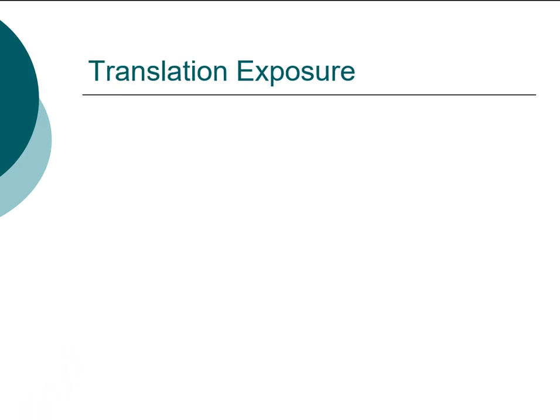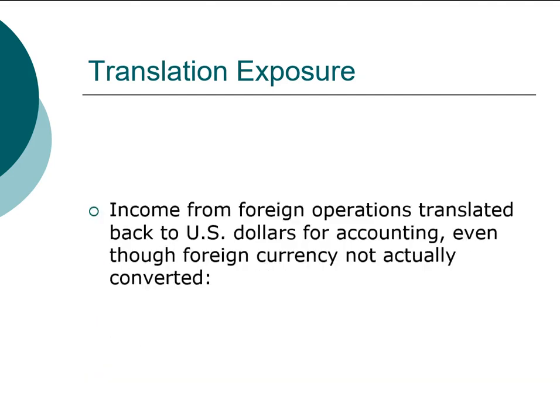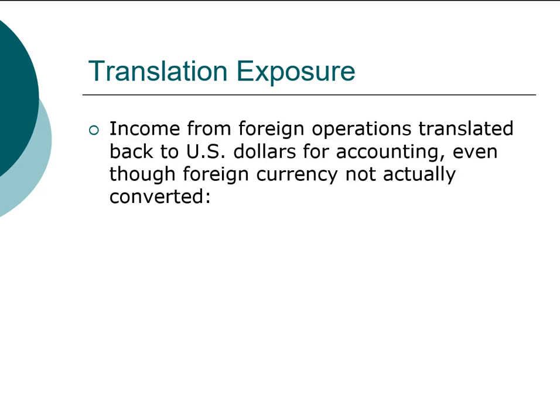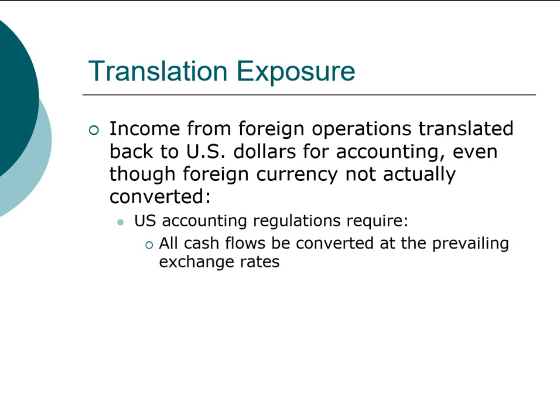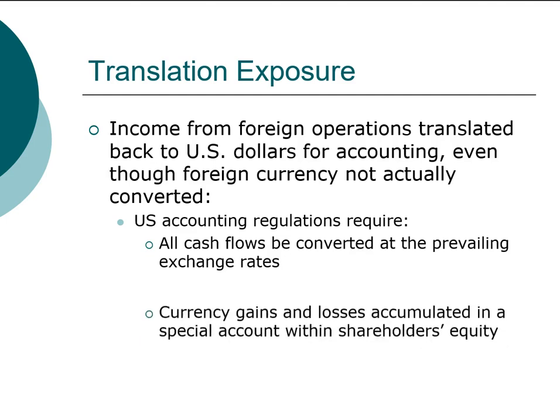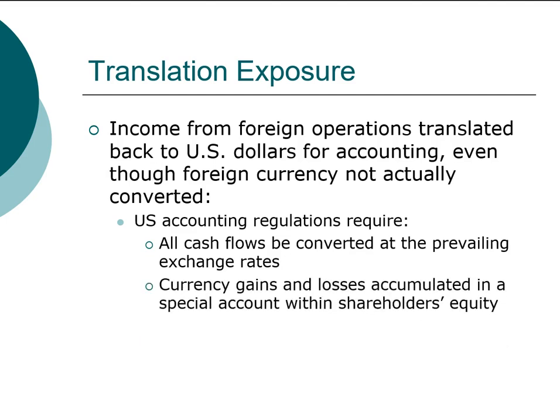The third form of exposure is called translation exposure. Translation is unrelated to the actual economic or day-to-day operation of the firm. It has to do with translating the foreign operation results to the U.S. accounting system. There's no conversion of cash flow, no exchange of goods — this is simply a translation of foreign financial reporting. U.S. accounting regulation requires that all cash flows be converted at the current exchange rate, and if there's any gain or loss due to currency it must be reported and recorded in the shareholders' equity account.